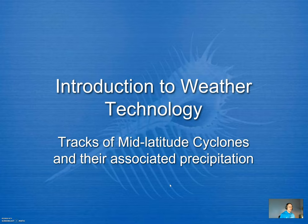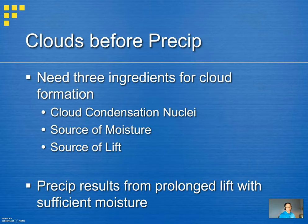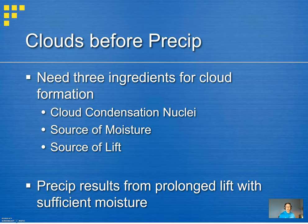Looking here again at mid-latitude cyclones, talking about the cyclone tracks along with the associated precipitation. Some of this is going to feel a little repetitive from previous lectures, but that's a good way to step into things. When we think about precipitation, we need to first and foremost consider that we need some clouds, and to get those clouds to form, the three main ingredients are cloud condensation nuclei, a moisture source, and a source of lift. In our current atmosphere, cloud condensation nuclei are not a concern — there are plenty of CCNs, ranging from salt particles to other forms of pollution, and they're always readily available.